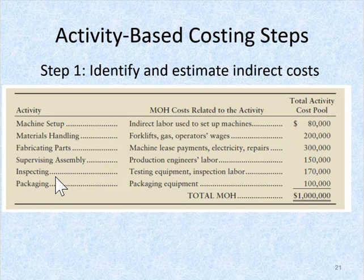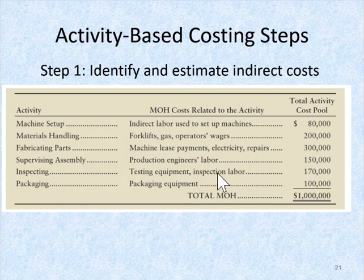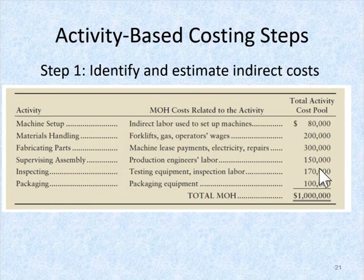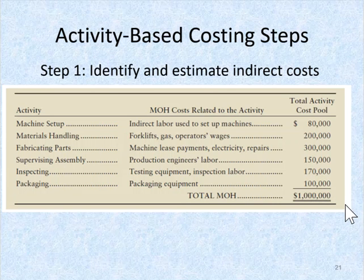Inspecting includes the testing of equipment and labor specifically allocated for inspecting. Packaging includes the packaging equipment. After looking at all costs related to those various activities, they came up with a one million dollar total manufacturing overhead.